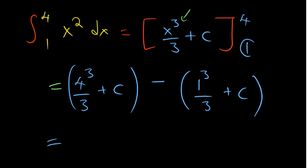4³ is 4 times 4, 16 times 4, which is 64. So I have 64/3, the c's subtract, and then 1³ is just 1/3, which reduces to 63/3. 3 into 6 is 2, so that's 21.